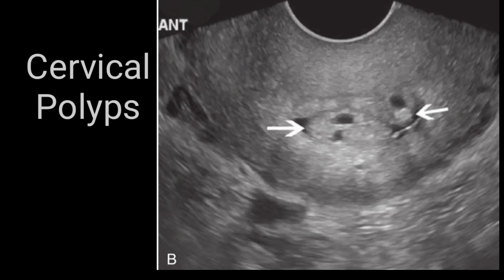On this transvaginal scan, the cervical area is clearly seen. Two echogenic lesions are indicated by white arrows in the cervical canal — these are cervical polyps. Polyps may occur in the cervical region; sometimes they are small, sometimes large enough to protrude out of the external os. These are classical examples of cervical polyps. Cervical polyps usually appear round and echogenic; very rarely will they appear hypoechoic.